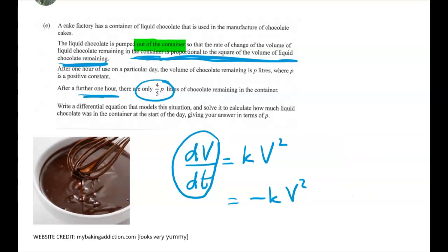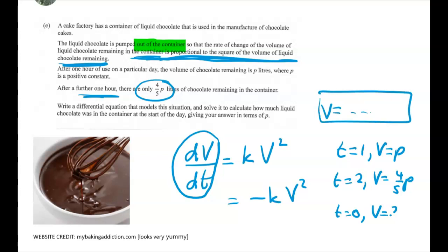What else do we know? Well we know that when T equals 1, V is equal to p, and when T is equal to 2, V is equal to four-fifths of p, and we have to figure out when T is equal to zero what is V. They haven't told us that we need to get right through and make it explicitly V equals blah blah blah, but that's what I'm going to do in this problem.